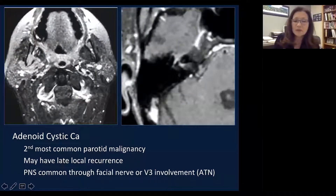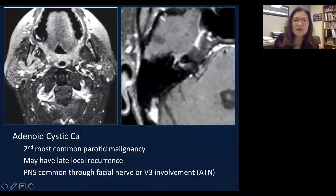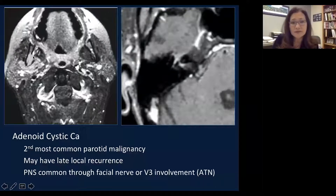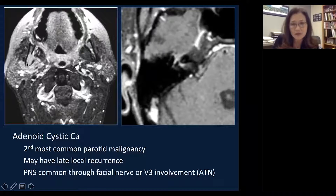The second most common parotid gland malignancy is adenoid cystic carcinoma. Notice the mass in the deep lobe of the parotid gland. It involves the mandible — notice the bone destruction of the inner cortex of the ascending ramus of the mandible — and the tumor invades directly into the bone. These are very aggressive imaging features, not seen in benign parotid gland tumors.